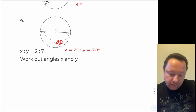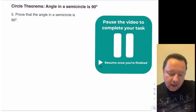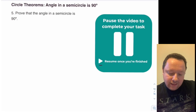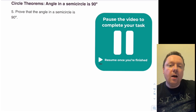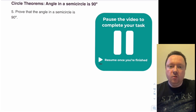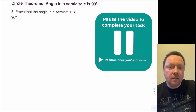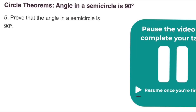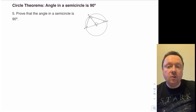One last question for you to try: prove that the angle in a semicircle is 90 degrees. Go back right to the start of the video, have a look at how I proved it, see if you can follow it and reproduce it yourself. Give it a go, see how you get on, then I'll go through it one last time. Prove that the angle in the semicircle is 90 degrees.